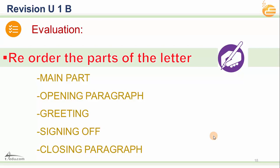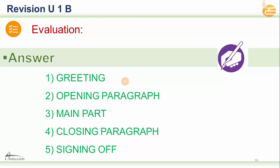An informal letter is written to a friend, a brother, or someone you know — so you don't need to use very formal language. You can use short expressions and the same vocabulary you use with friends. When reordering a letter: start with the greeting, then the opening paragraph, then the main part, then the closing paragraph, and finally sign off with your name.